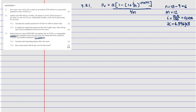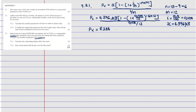Now we substitute everything: PV = 4396.83 × [1 − (1 + 0.104/12)^(−6×12)] / (0.104/12). Pass this into the calculator and the outstanding balance is R234,775.